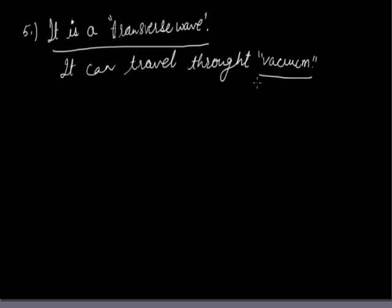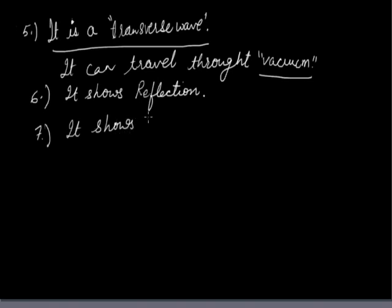Now, we see the sixth property. And sixth property is that the light shows reflection. And what is the reflection? We will study in our next class. It shows reflection from a very plain polished smooth surface. Seventh property, it shows reflection when it travels from one medium to another medium.